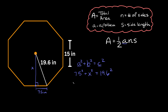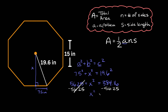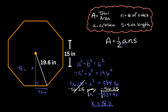Multiplying those out, we get 56.25 plus x squared equals 384.16. Solving for x squared, we subtract 56.25 from both sides to get x squared equals 327.91. Taking the square root of both sides, x is approximately 18.11 — that's the length of the apothem.